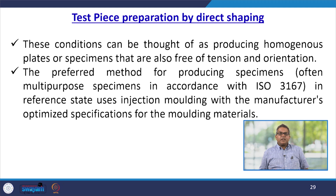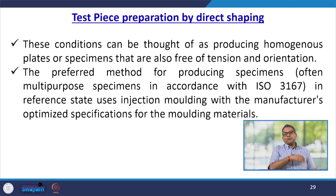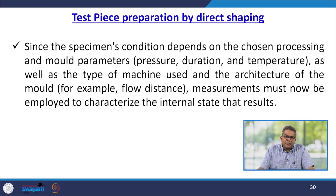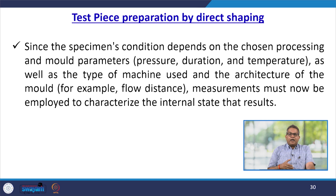These conditions can be thought of as producing homogeneous plates or specimens that are free of tension and orientation. The preferred method for producing multipurpose specimens in accordance with ISO standards in reference state uses injection molding with manufacturer-optimized specifications for molding materials. Since the specimen's condition depends on the chosen processing and mold parameters — pressure, duration, temperature — as well as the type of machine used and the architecture of the mold, measurements must now be employed to characterize the resulting internal state.